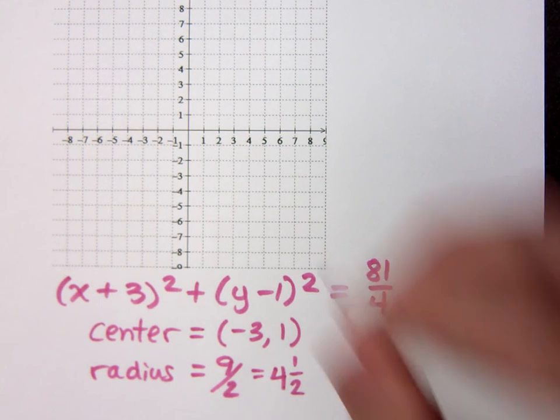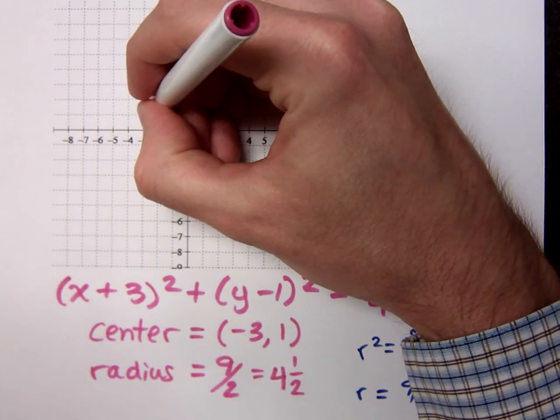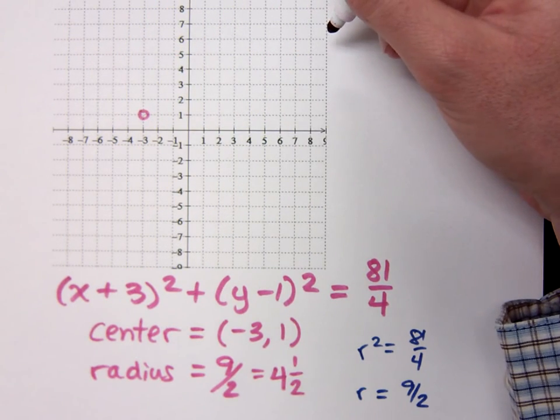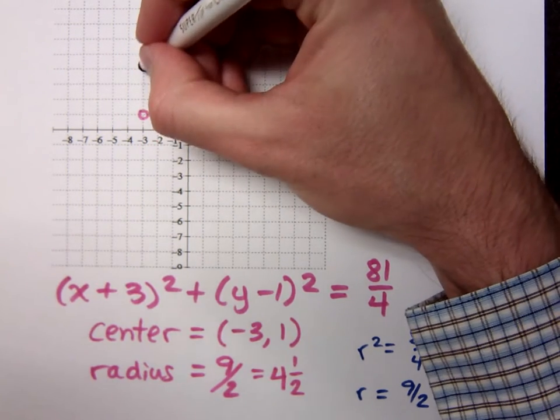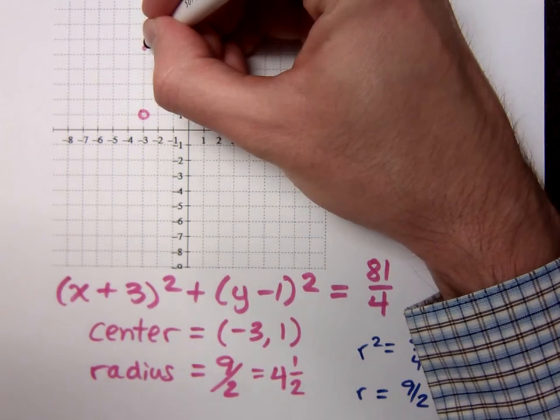So, my center is negative 3, 1. We're going to go up, down, left, and right, 4 and a half units. So, 1, 2, 3, 4 and a half.